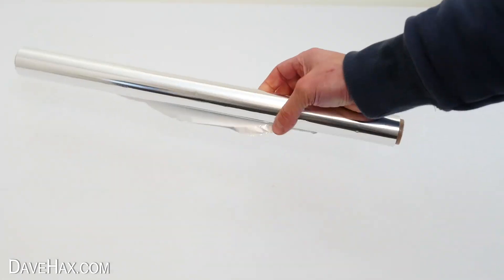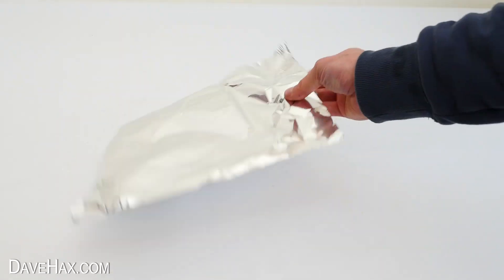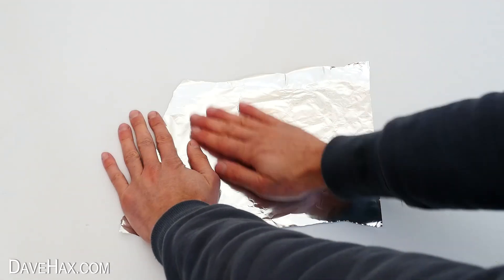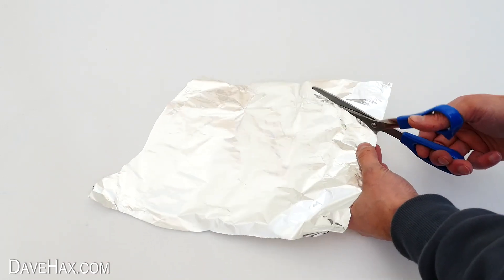For the first one we need to tear off a piece of kitchen foil, spread it out nice and flat and use some scissors to cut it into a circle like this.